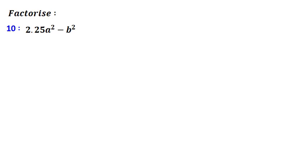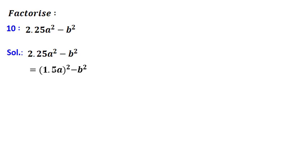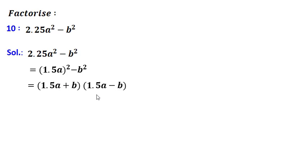Tenth problem: 2.25a squared minus b squared. Now 2.25 is the square of 1.5, so I will write this as (1.5a) squared minus b squared. This gives me (1.5a + b) into (1.5a - b).